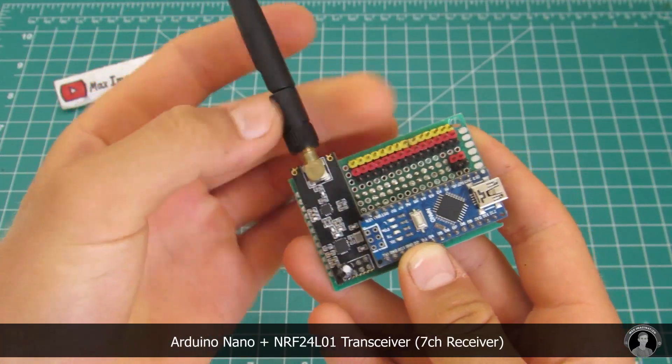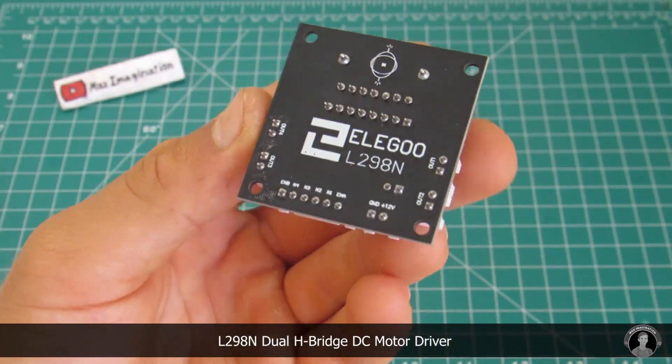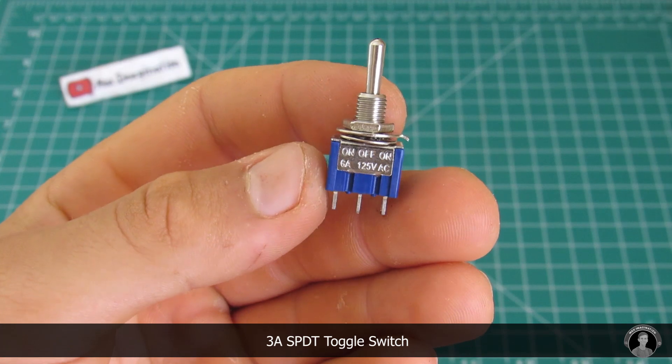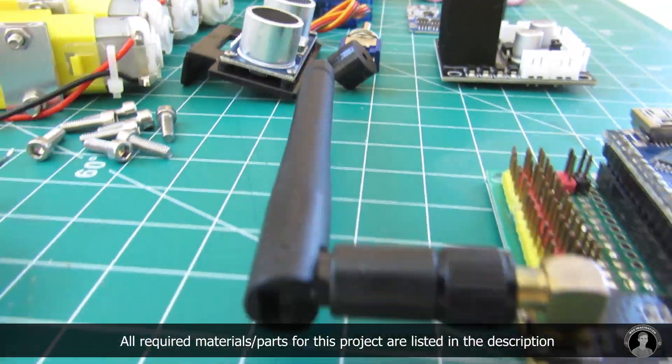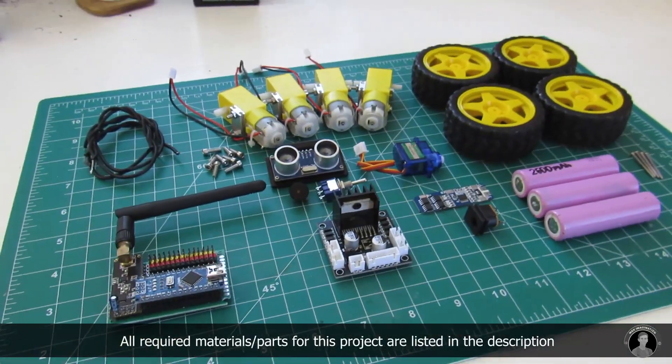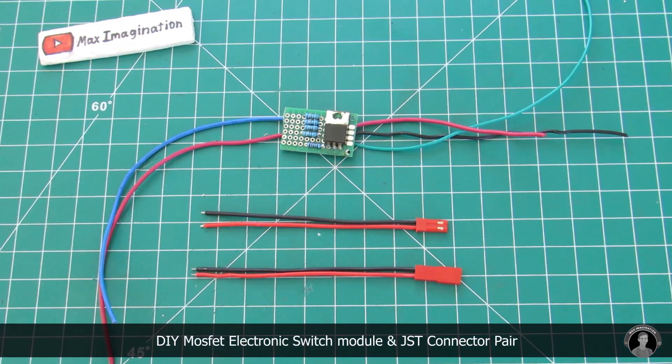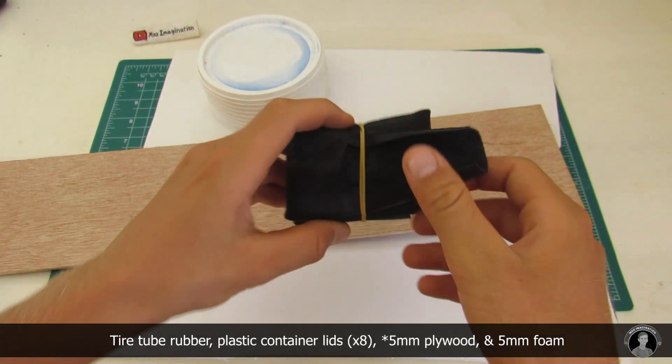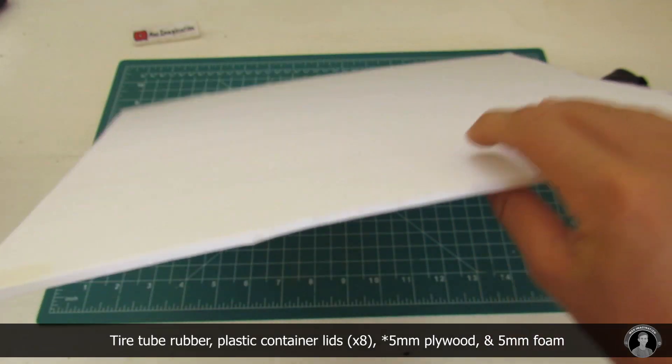So just before we make the car itself, let me introduce its main parts. This is my homemade 7-channel receiver, H-bridge motor driver, ultrasonic sensor, geared motors, 9-gram servo motor, toggle switch, buzzer, lithium-ion batteries, BMS board, and four regular wheels. Additionally, we have a JST connector pair and a homemade MOSFET switching circuit. Bicycle tire tube rubber, sour cream container lids, 4mm plywood, and poster board foam.